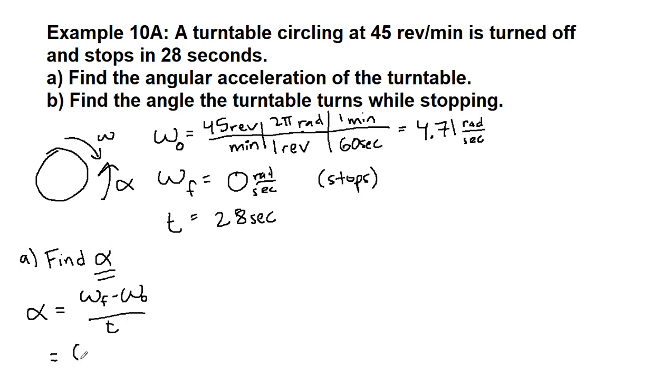The final omega is 0, the initial is 4.71, and the time elapsed is 28 seconds. We get negative 0.168 radians per second squared.